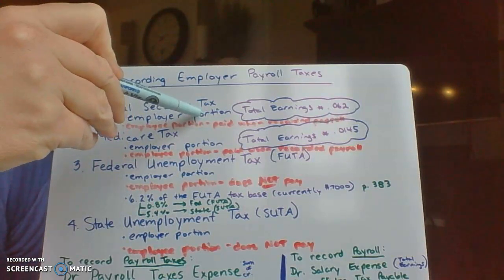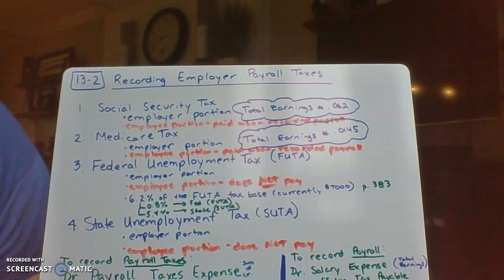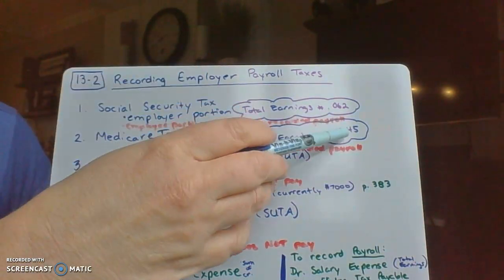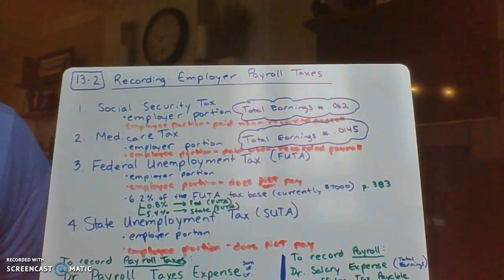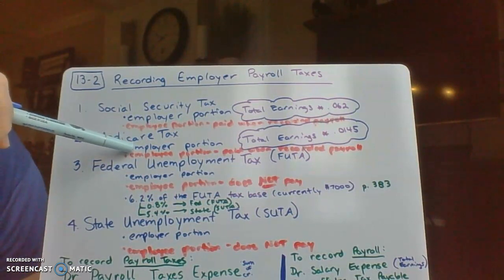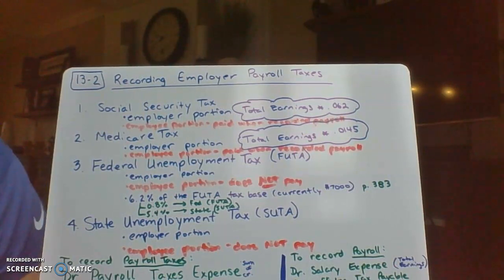Medicare works the same way. The employee pays 1.45% and the employer also pays 1.45% of total earnings, so you end up with 2.9% total going into Medicare. The employer has to pay both Social Security and Medicare — these are the first two you'll compute.